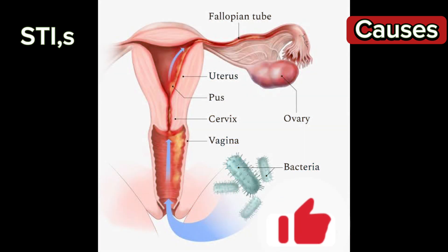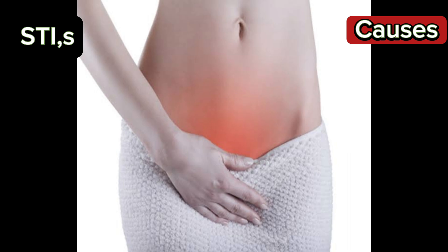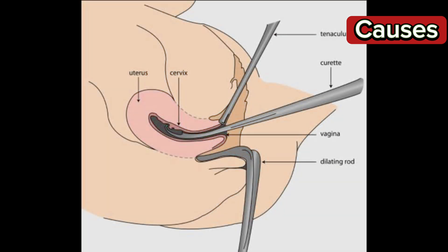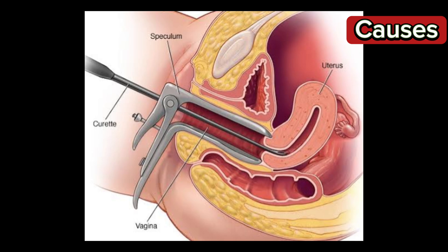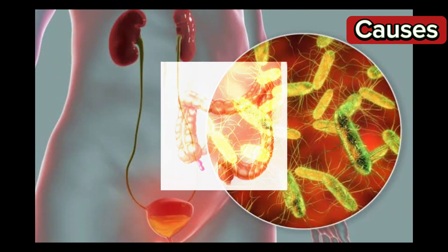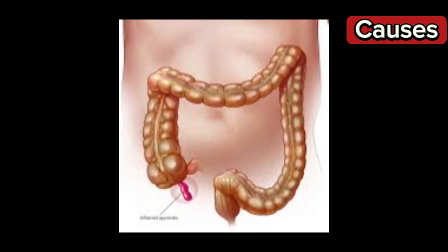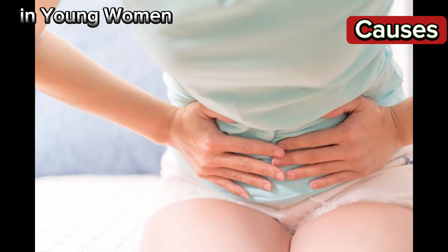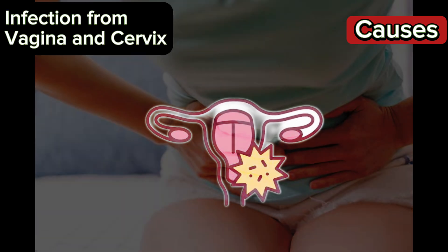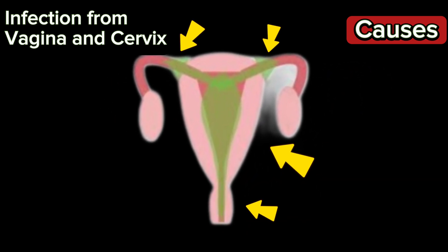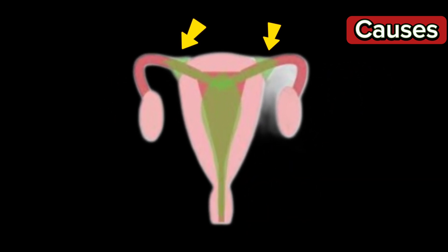Bacterial infections occur following lower abdominal surgical procedures, complication of pelvic inflammatory disease, lower genital tract infections, appendicitis, diverticulitis, and inflammatory bowel disease. In young women, it can start as an ascending infection from vagina and cervix and spreads to uterus, fallopian tube, ovary and peritoneum.